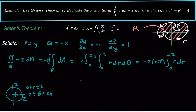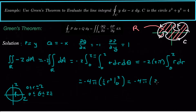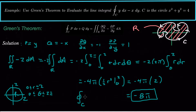That gives us negative 4π times one-half r squared evaluated from 0 to 2, which is negative 4π times 2, giving a final answer of negative 8π. So our line integral over the closed curve C is equal to negative 8π.